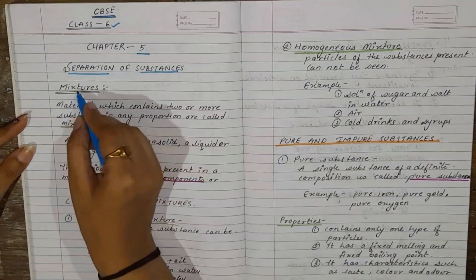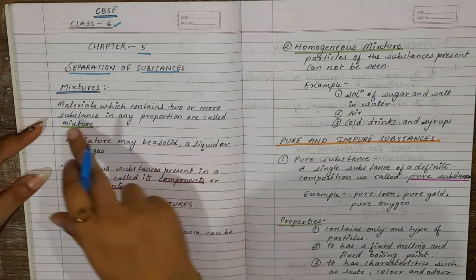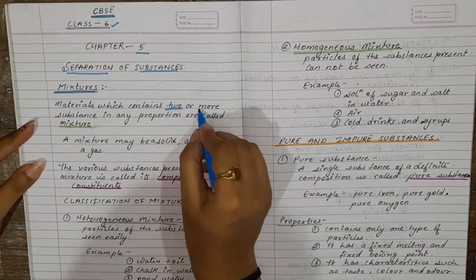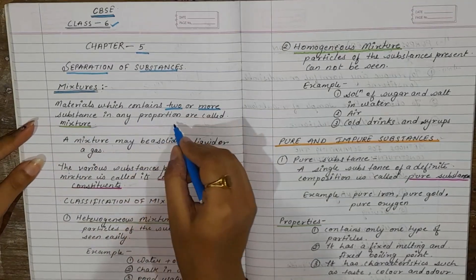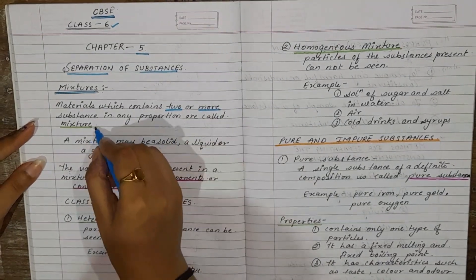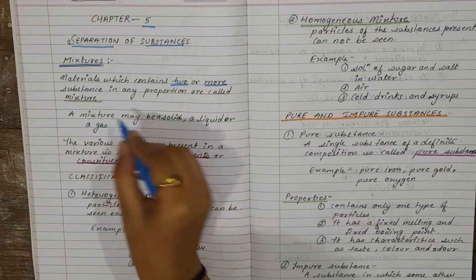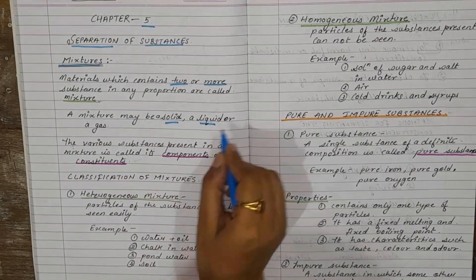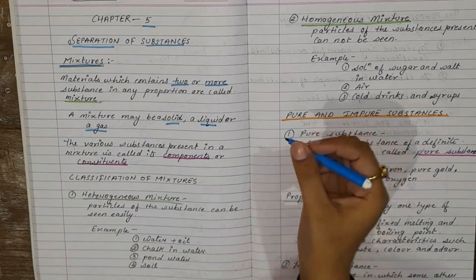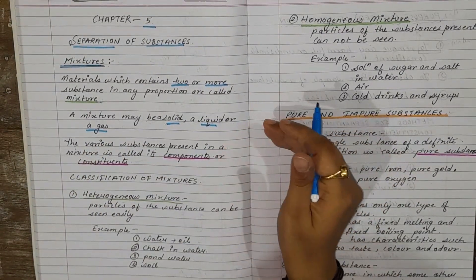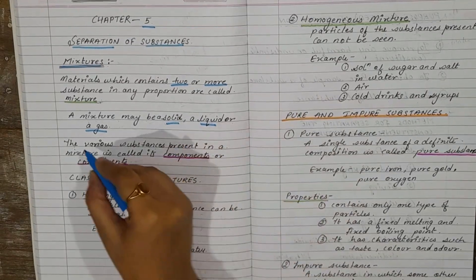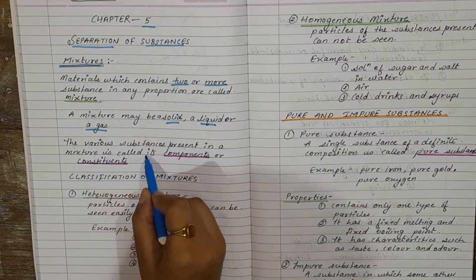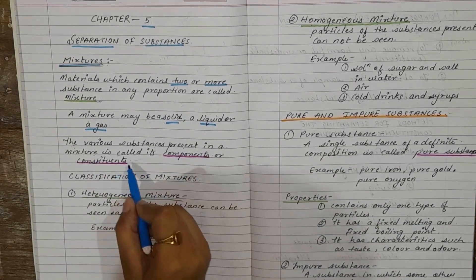The first topic of the chapter is mixture. Materials which contain two or more substances in any proportion are called a mixture. A mixture may be solid, liquid, or a gas. The various substances present in a mixture are called components or constituents.